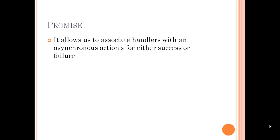After the callback, we have a modern alternative called promise. As the name implies, when you make a promise you either complete it or fail to fulfill it. The definition is: a promise allows us to associate handlers with an asynchronous action's eventual success or failure.